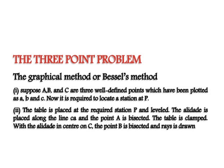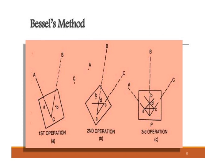In the three-point problem by graphical or Bessel's method, A, B, and C are three well-defined points plotted as small a, b, and c. It is required to locate a station at P. The plane table is placed at P and leveled. The alidade is placed along line CA and point A is bisected; the table is clamped. With the alidade centered on C, point B is bisected and a ray is drawn. This is the first operation. Similarly, with the station pin at A, point C is bisected. In the third operation, one point is obtained from which all stations A, B, and C are established.